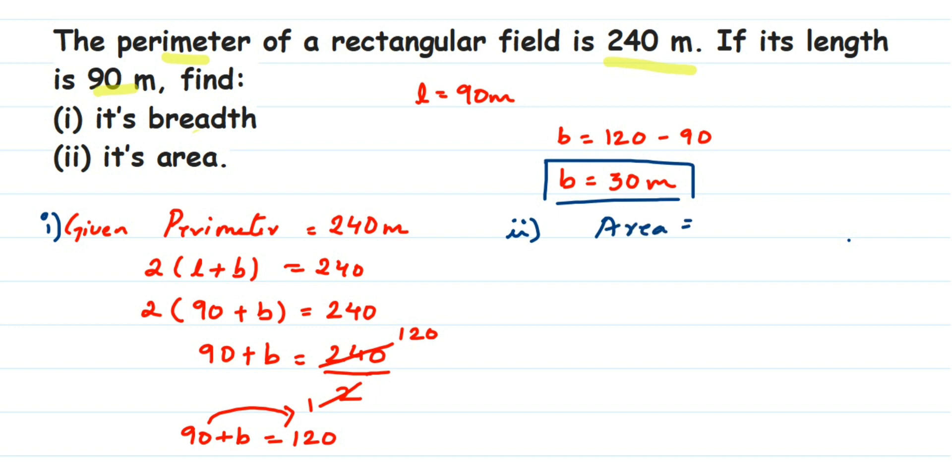We know the area formula: Area = length × breadth. Length is 90 meters multiplied by breadth 30 meters. 9 times 3 is 27, and we have two zeros, so 2700. Meter times meter is meter square, so the area is 2700 m².